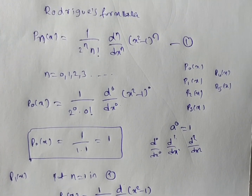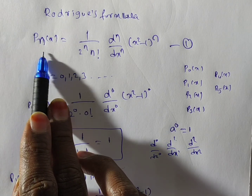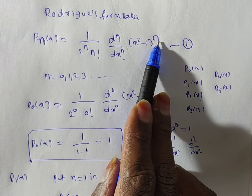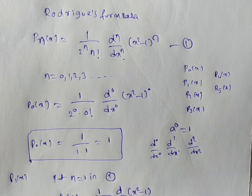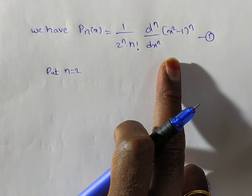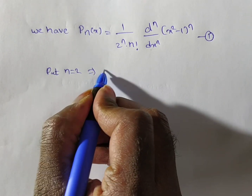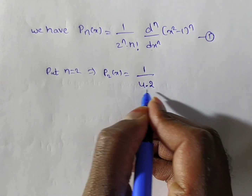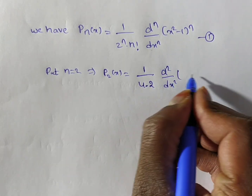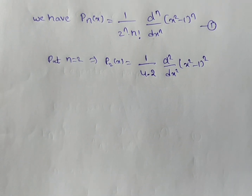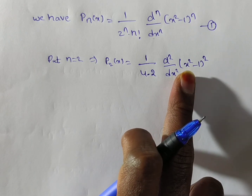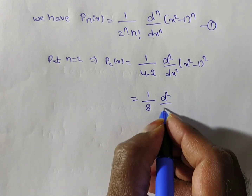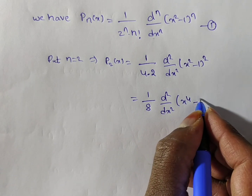Now, P2 of x. In the Rodrigues' formula, substitute n equal to 2. You will have 1 by 2 squared into 2 factorial, into d squared by dx squared, times of x squared minus 1, whole squared. Here 2 squared is 4, and 2 factorial is 2, so the denominator is 8. Now, x squared minus 1 whole squared expands as x to the power 4 minus 2x squared plus 1. So we have 1 by 8 times d squared by dx squared of x to the power 4 minus 2x squared plus 1.